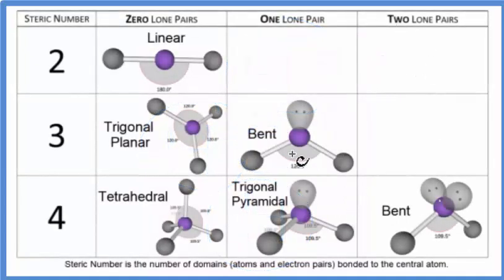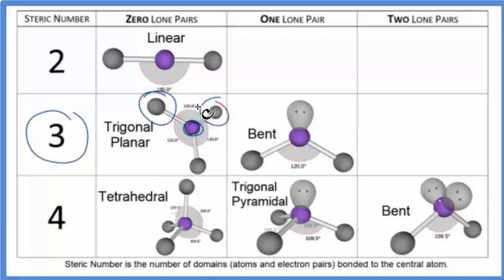According to our table, we said there are three different things - we call that the steric number - bonded to that central carbon. Here we have our central carbon: one, two, three different things. Because of that, and there aren't any lone pairs, the molecular geometry is trigonal planar.